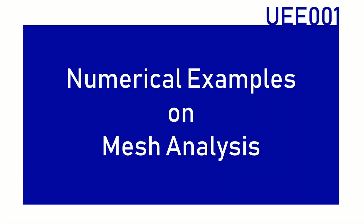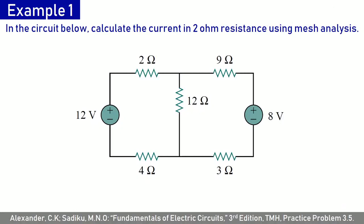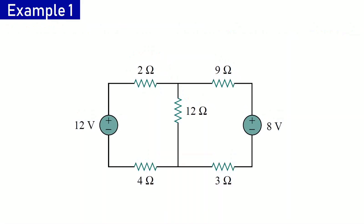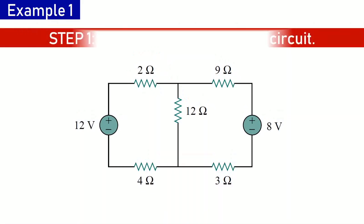Let us take some numerical examples on mesh analysis. We will take up three examples and solve each question in a step-by-step manner. In example one, a circuit is given with independent sources and resistances, and we are required to calculate the current in the 2-ohm resistance using mesh analysis.